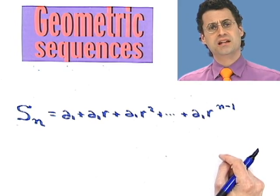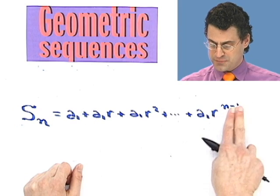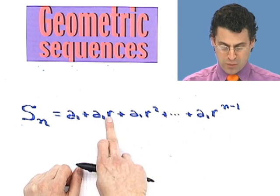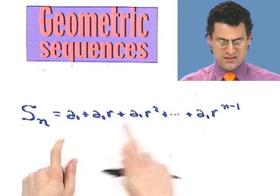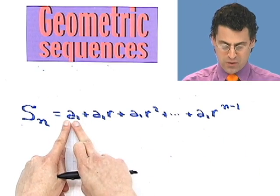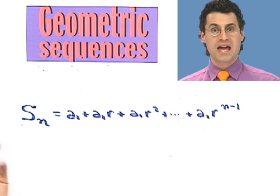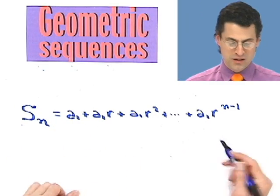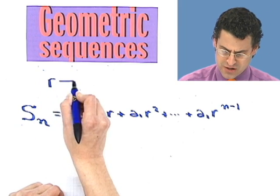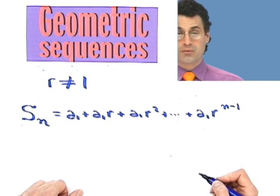I'm going to make a little assumption here. It would not be at all interesting if r were the number 1. If r were just 1, then all the r-to-powers would just be 1 — 1 squared is 1, 1 to the n minus 1 is still 1. So this would be a whole bunch of just a1s, and there'd be n of them. So this sum would be easy: it would be n times a1. Let me now make the more interesting assumption that r is not the number 1.